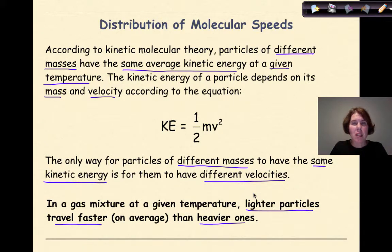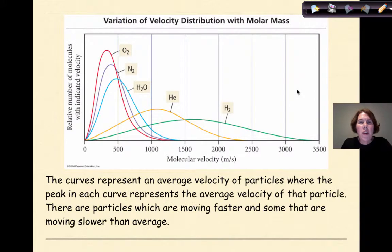They're all going to be at the same temperature because they have the same kinetic energy. But lighter particles are going to move faster, while heavier particles are going to move slower. One way that we can look at these different velocities is looking at this diagram right here, which gives variation of velocity distributions with molar mass. So these curves represent average velocity of particles, where the peak in each curve represents the average velocity of that particular particle.